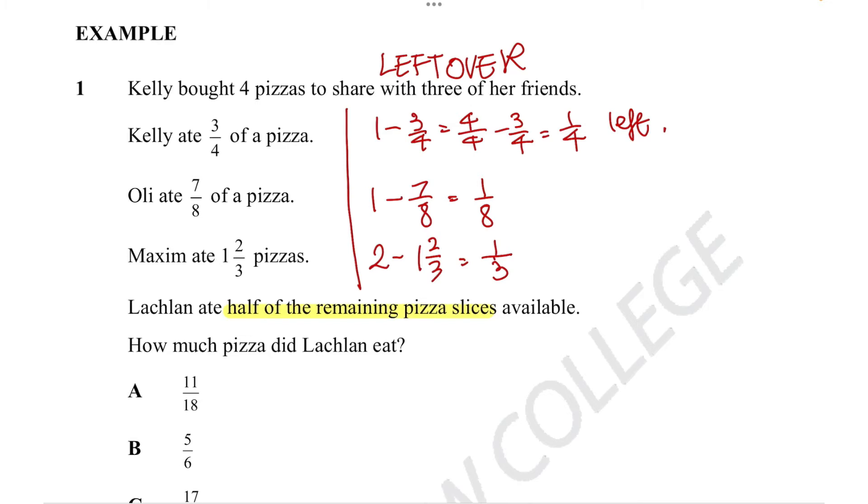Okay, so that means of the four pizzas we began with, we've only got these fractions left over and Lachlan has eaten half of these pizzas. So it makes sense that if we add all these fractions together, then see what half of it is, we'll be able to figure out how many pizza slices Lachlan has eaten. So let's do exactly that.